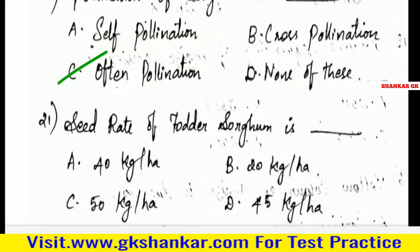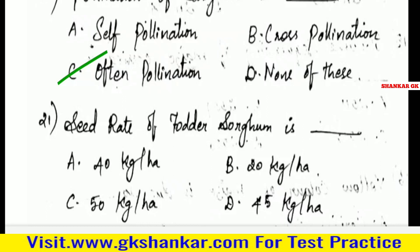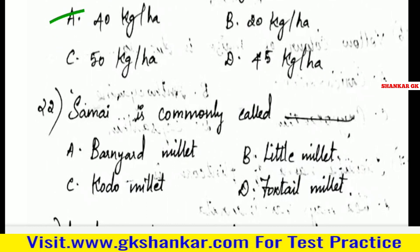Twenty-first question: Seed rate of fodder sorghum is — A. 40 kg per hectare, B. 20 kg per hectare, C. 50 kg per hectare, D. 45 kg per hectare. Answer: A. 40 kg per hectare.